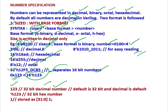And if the base format is there but there is no size, if we do not mention size then it is by default 32 bit. So 'h123 is a 32 bit hex number. If we simply write 1, this is stored as 32 bit 1.